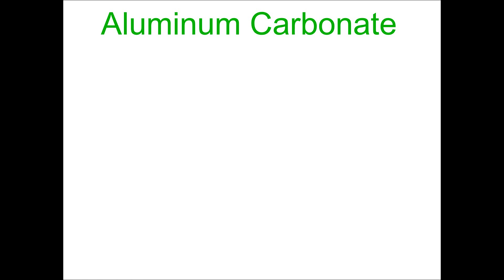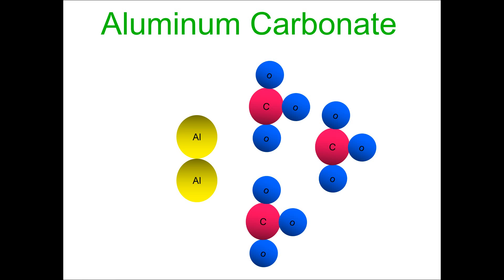To further understand what aluminum carbonate represents: it contains 2 aluminum atoms and 3 carbonate polyatomic ions. Remember how we learned about polyatomic ions — they're covalently bonded atoms that together represent an ion. So each carbonate group here is a carbonate ion, and all of it together represents aluminum carbonate.